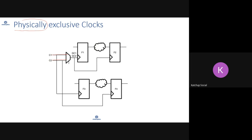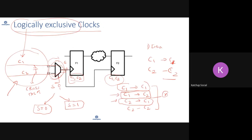Addressing a question about whether different constraints are needed for CDC and STA: you don't need to maintain different constraints. Whatever constraints your STA uses should typically work for CDC as well. If clocks are synchronous, they are synchronous in both CDC and STA; if they're asynchronous, they're asynchronous in both. CDC cares only about asynchronous clocks, STA cares about synchronous clocks. For both, you have to run analysis with S equal to zero and S equal to one to make sure you don't miss anything.